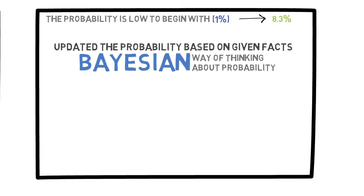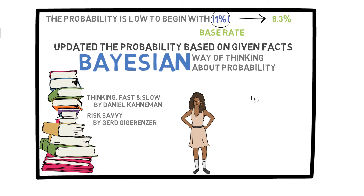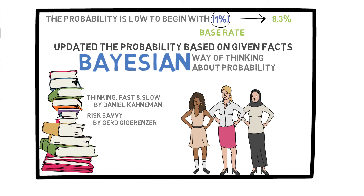The way we think about this is important because in many real-life scenarios, we tend to forget about this number — 1%, which is called the base rate — and just focus on the accuracy of the test. This is an example of one of the flaws in our intuitive thinking. Daniel Kahneman describes this concept very well in Thinking Fast and Slow. Geert Gigerenzer's book, Risk Savvy, also discusses this concept with some real-life implications. For example, he talks about breast cancer screening for women and the statistics behind routine mammograms.